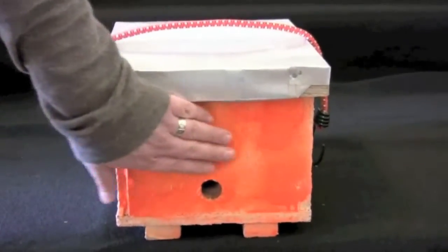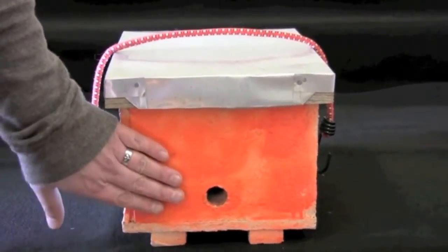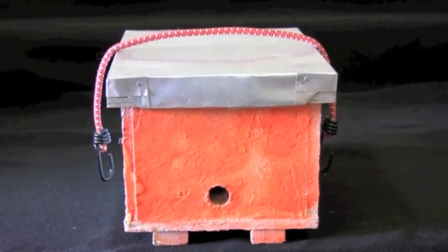Now, you'll also notice the front of this nest box is painted, and if you install this outside, this will allow bees to have an orientation cue to be able to find the nest.